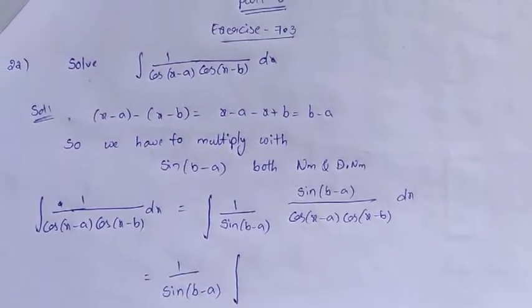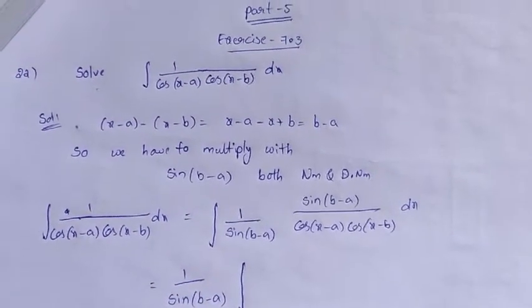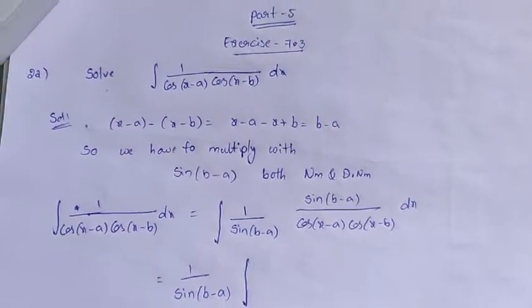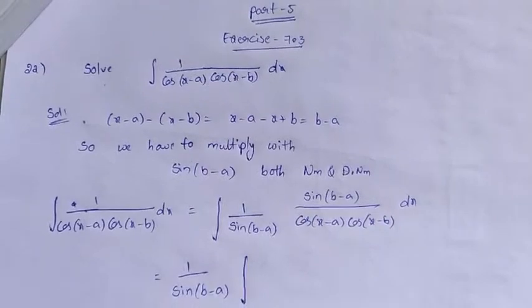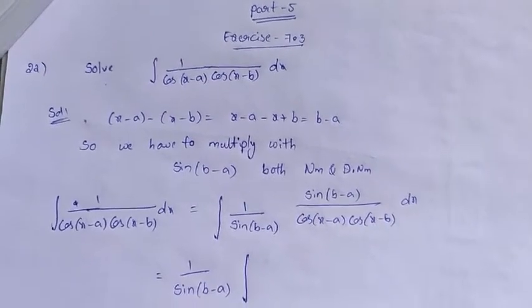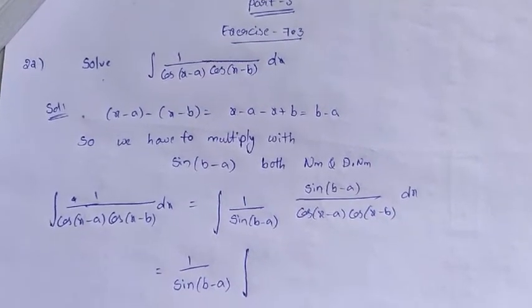Here is the question: solve the integration of 1 divided by cos(x minus a) into cos(x minus b) dx.